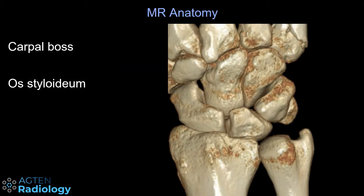On the dorsal aspect of the wrist you can either have a carpal boss or an os styloideum, and the difference is the base, here shown with the mouse. If it's fused with the metacarpal base then you would call it a carpal boss, and if it's a separate ossicle then it's an os styloideum.